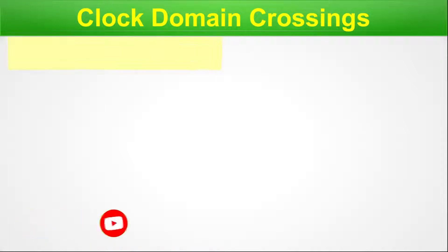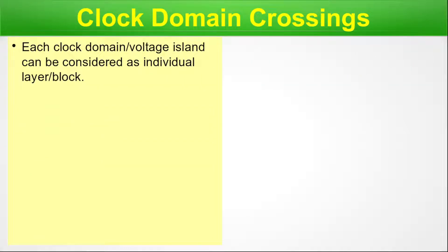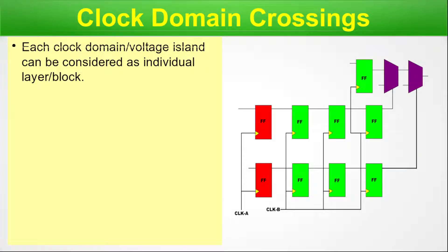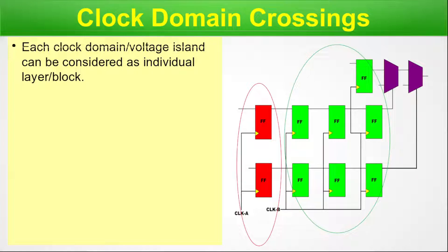Clock domain crossings. Each clock domain or voltage island can be considered as an individual layer block. In a modern day chip, that is in a SoC, we can find multiple clock domains or multiple voltage domains. Here is a simple diagram with multiple flip-flops and muxes, where one is the first clock domain owned by clock A and another is the second clock domain owned by clock B. Different clock domains are present in a modern day SoC and these clock domains evidently cross at some point.